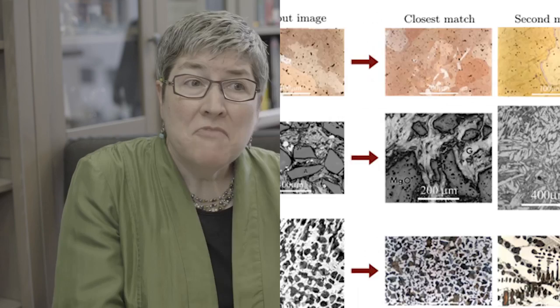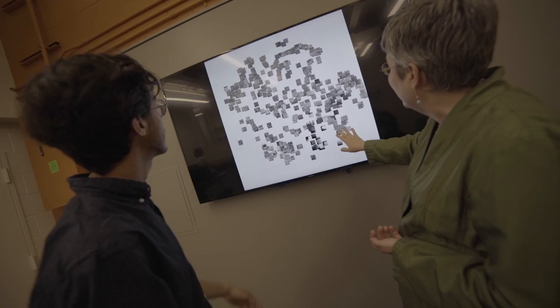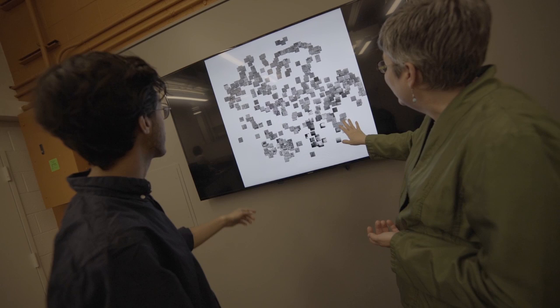What we do with computer vision is use fairly standard tools to find features in microstructures. The system gives us fingerprints for images. The first thing we can do is search for images — the search will return images that are similar to the one you've chosen. This is useful for dealing with an archive of images, such as a scientific publisher's archive, allowing customers to find images visually rather than by text. It's also useful for corporations and labs who want to access their image archives visually.